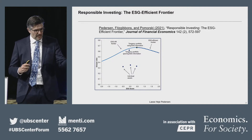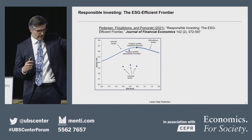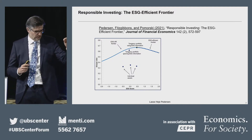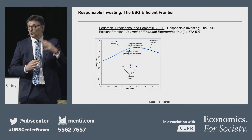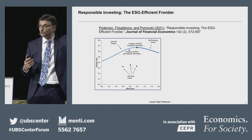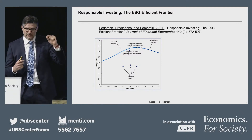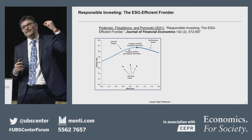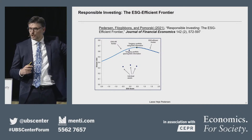On the X-axis, I have how green the investment is — further to the right is greener. On the Y-axis, I have the Sharpe Ratio, so higher is better. Every stock has an ESG score and a Sharpe Ratio, but you can also form portfolios of stocks, and for every possible ESG score, smart investors can find the portfolio that generates the highest possible Sharpe Ratio.